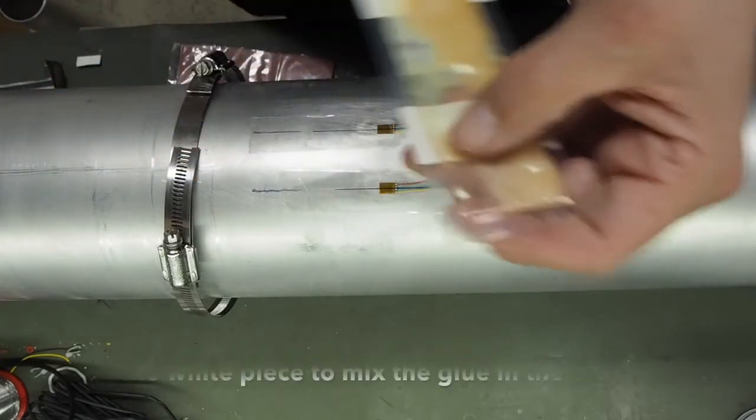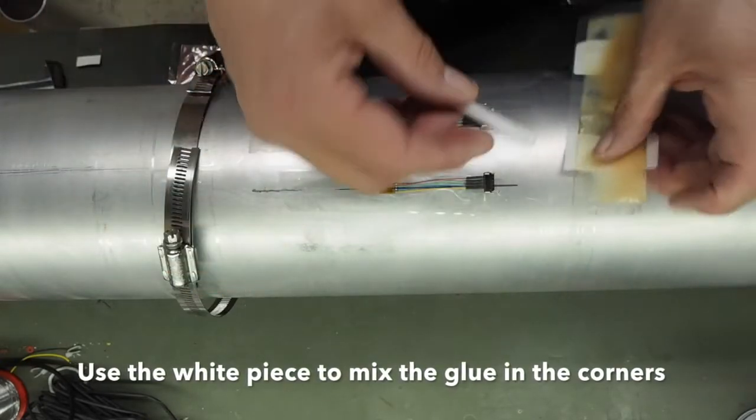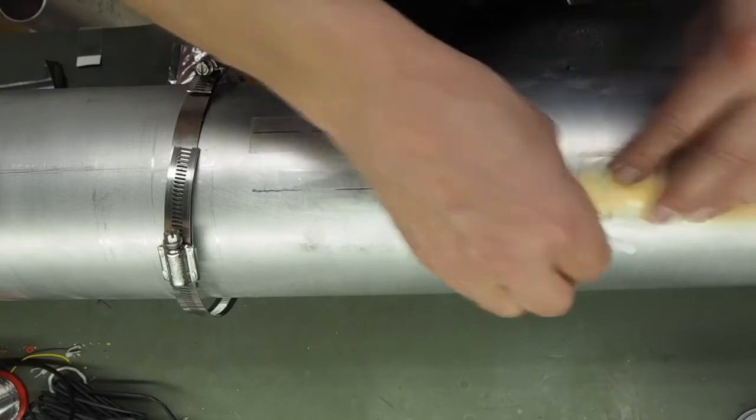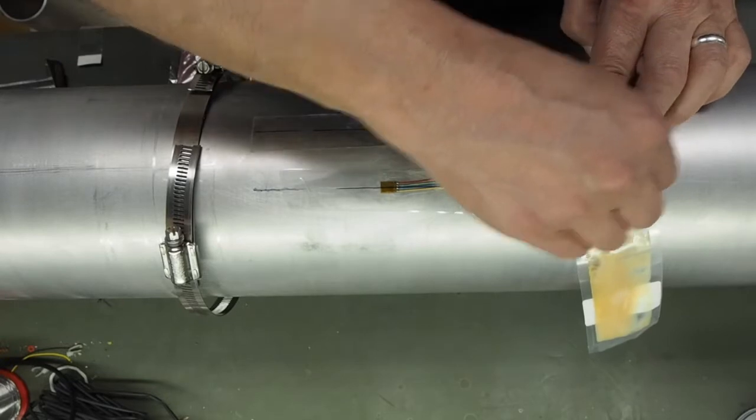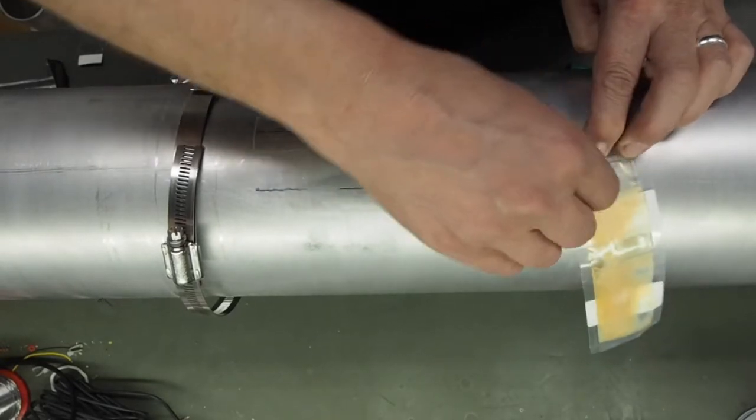If you get small amounts of glue in these corners, then you can use the white joining piece just to help into the middle so that we get the proper mix of the two parts of the adhesive.